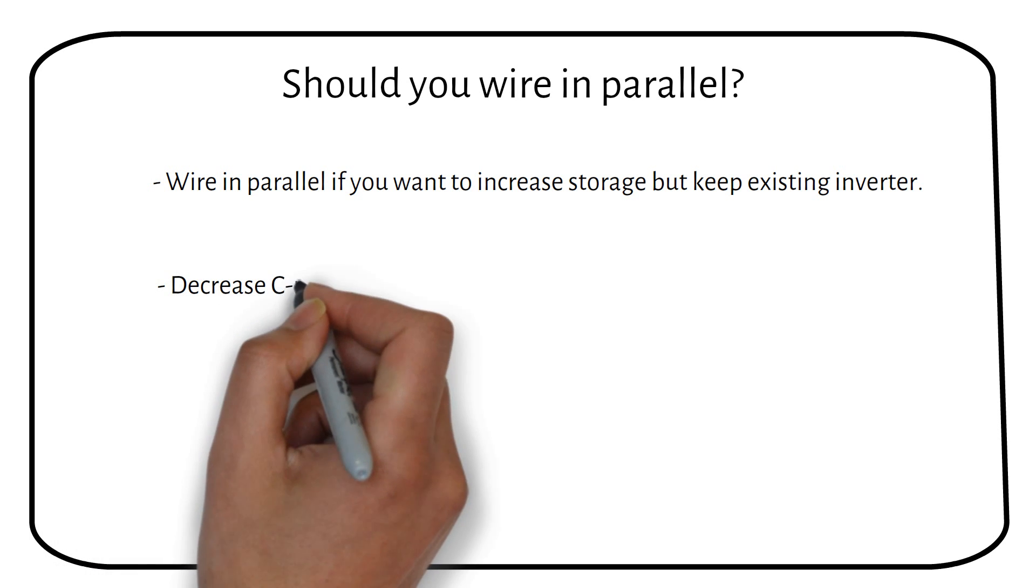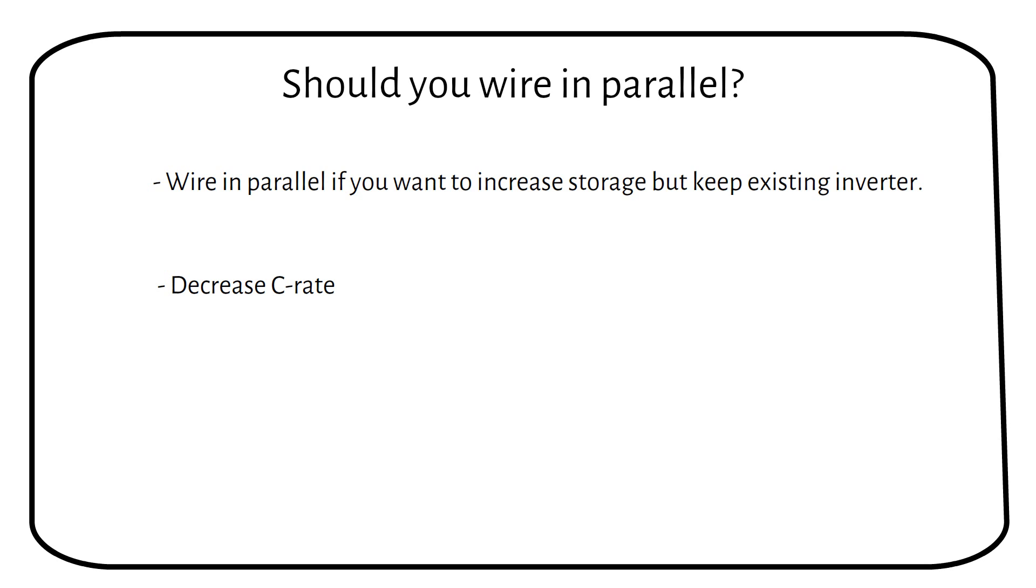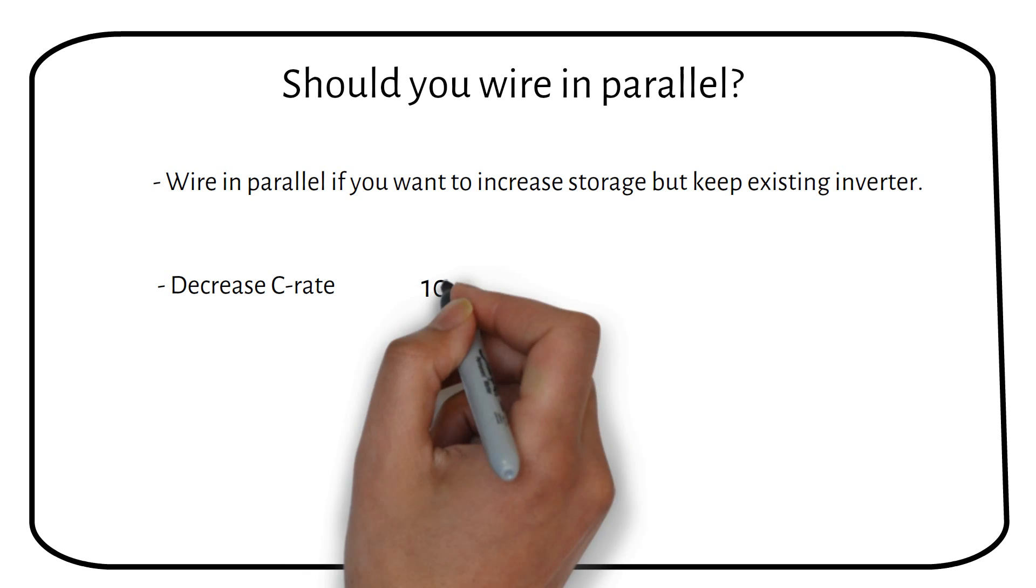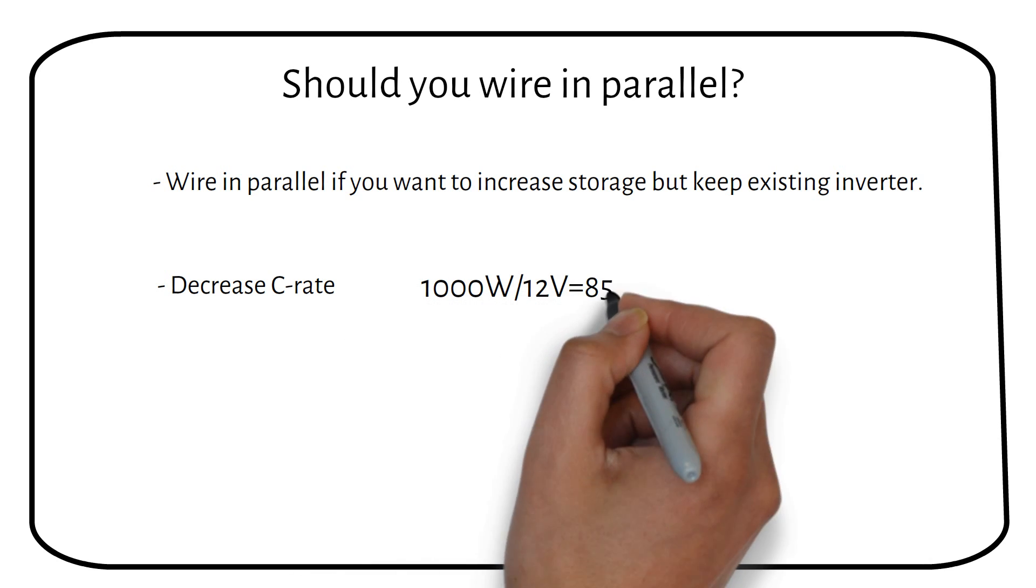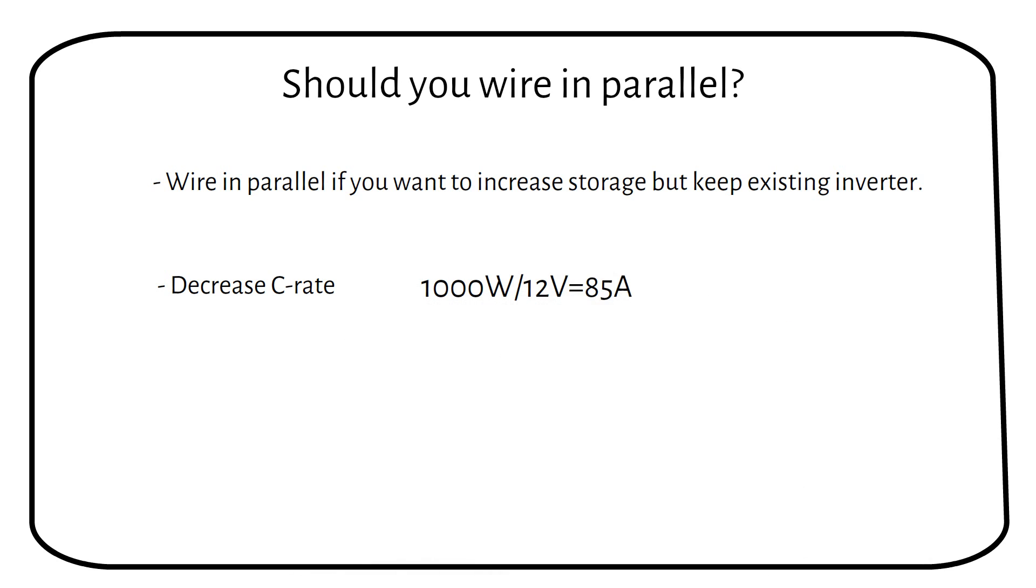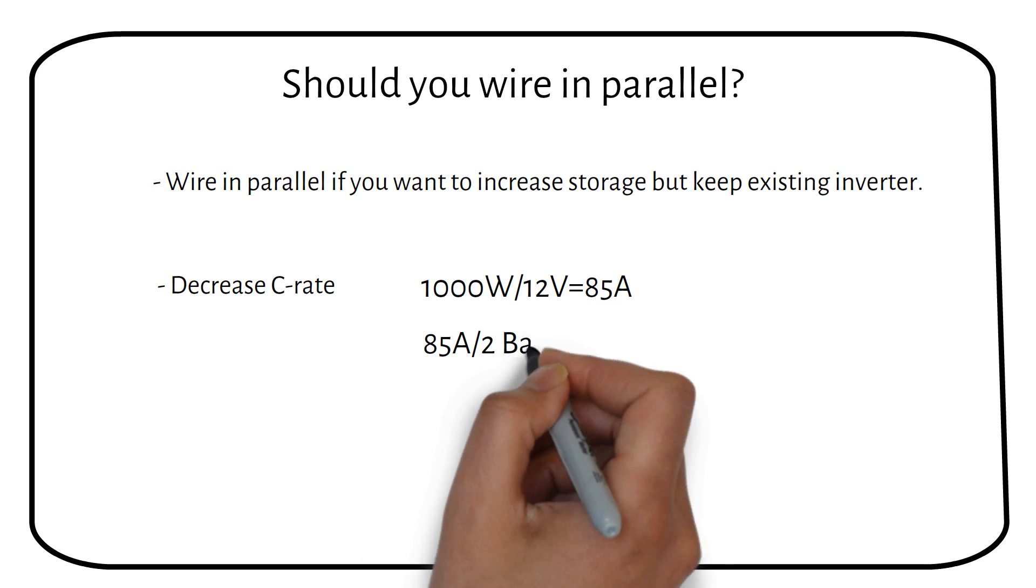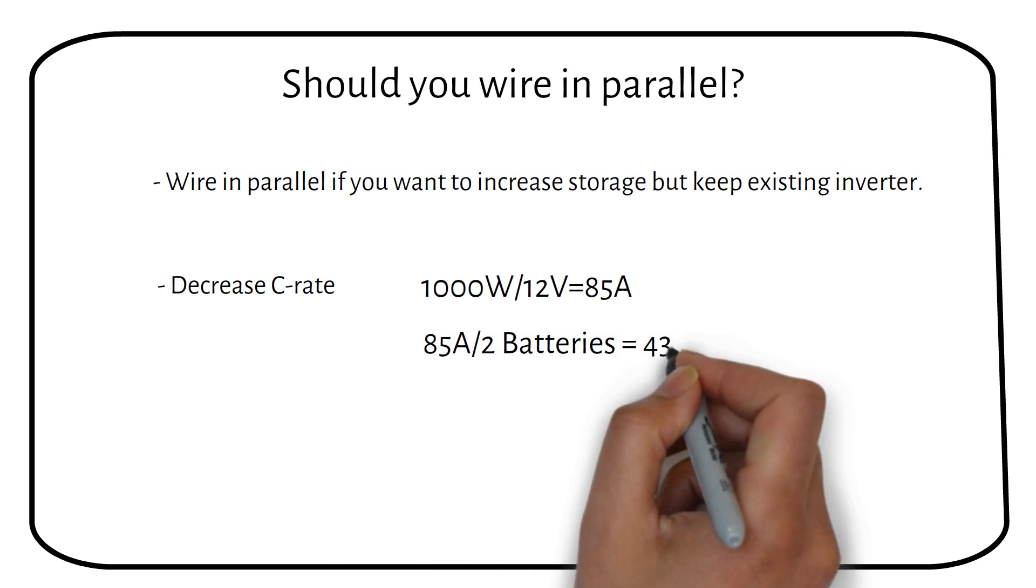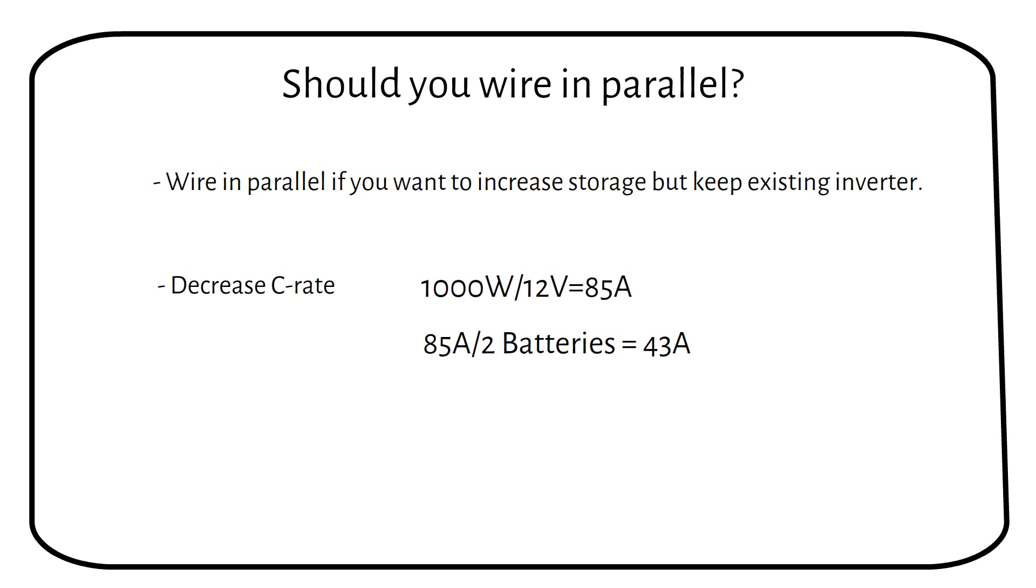If you wire batteries in parallel, you decrease the C-rate of the battery bank. Let's say you have a 12V 100Ah lithium battery with a 1000W inverter. You will pull 85A. If you add another battery in parallel, then the current draw will be reduced to 43A. Effectively halving the current draw from each battery will increase its lifespan.